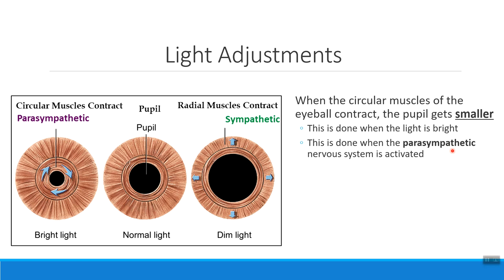Making your pupil smaller is something your eyes automatically do when you walk outside into bright light or go from a dark bedroom into a light hallway. This is also an action that our parasympathetic nervous system does for us. Write down that the parasympathetic nervous system is 'rest and digest.' After a big meal, we don't need much light information, so we contract our circular muscles, shrinking the pupil.